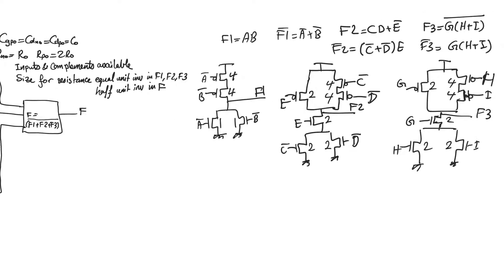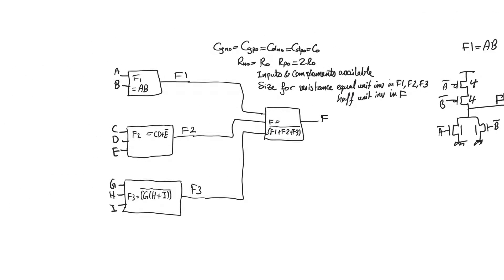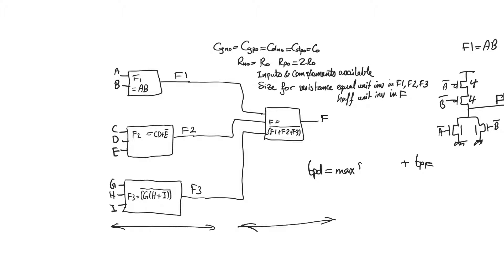Now we find the total delay of the circuit. The circuit consists of a first stage with f1, f2, and f3 operating in parallel, followed by gate f. The delay from inputs a through i to output f is the delay of gate f plus the maximum of the delays of f1, f2, and f3 — the maximum because all three operate in parallel.